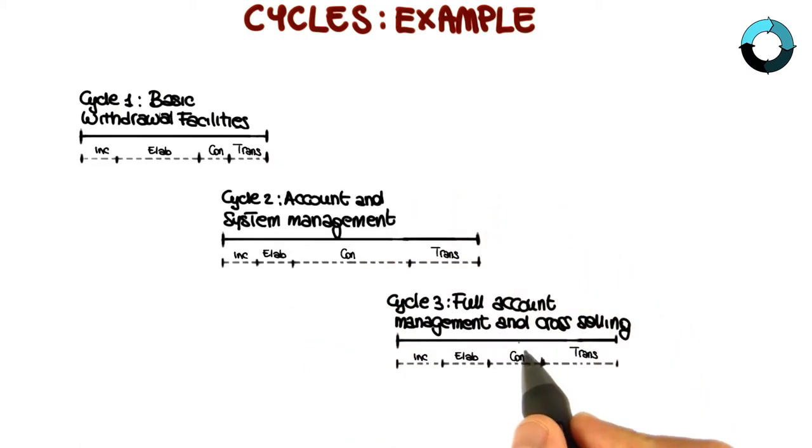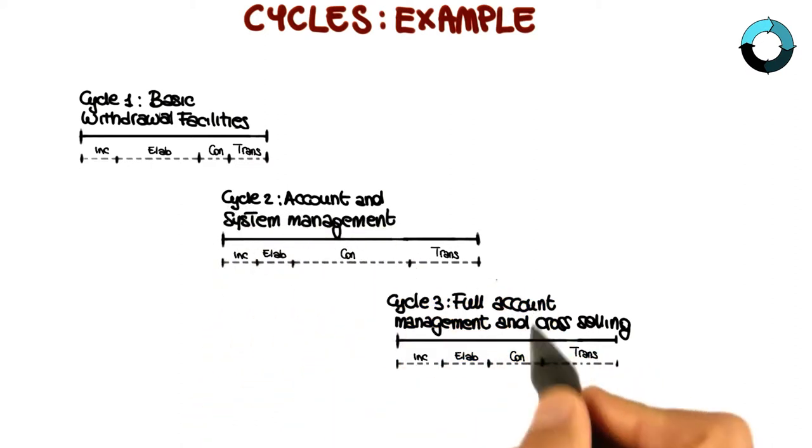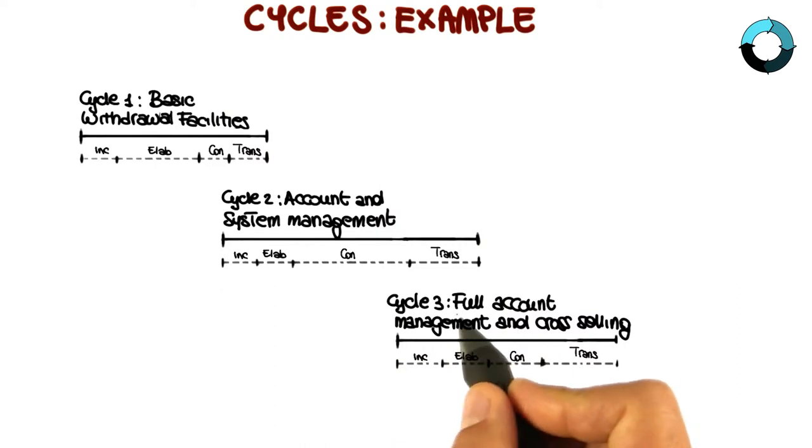Here I'm showing two possible additional ones. The first one, cycle two, which will develop the account and system management, and the third one, cycle three, which will develop the full account management and cross-selling.